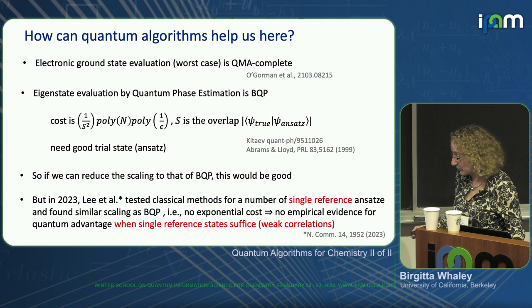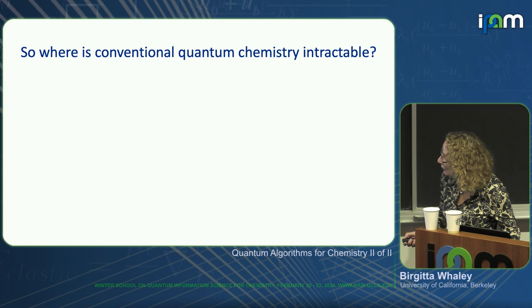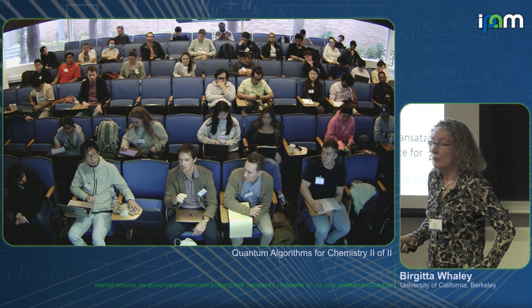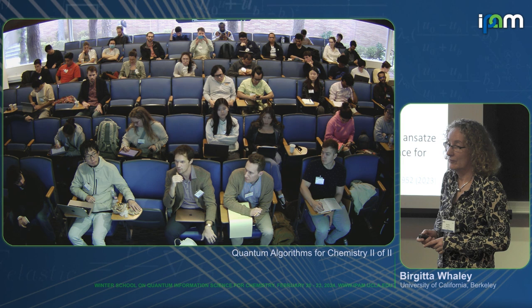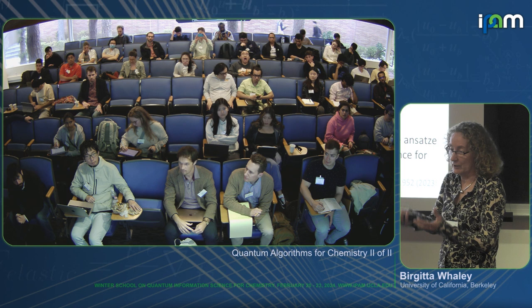The question is: where does conventional quantum chemistry actually completely fail? The worst case complexity of QMA means the worst model of a molecule would need full FCI — and a quantum computer cannot help you there either, since it's in the complexity class that's the analog of FCI for a quantum computer.